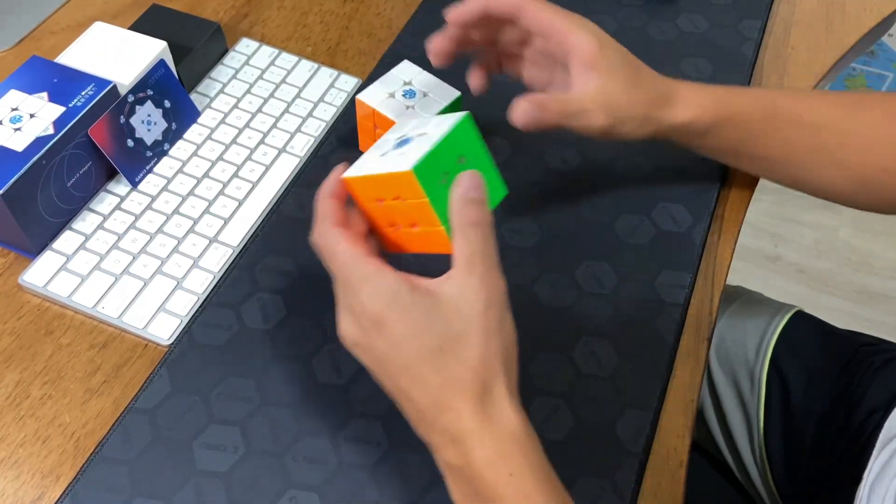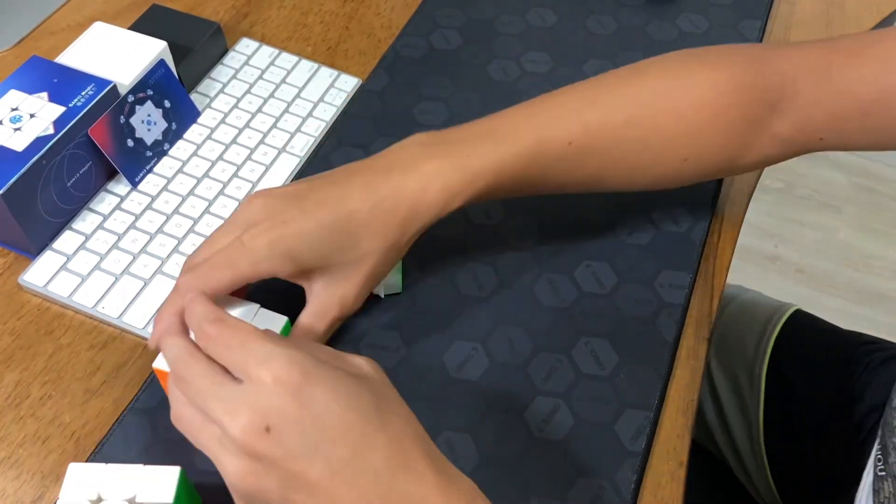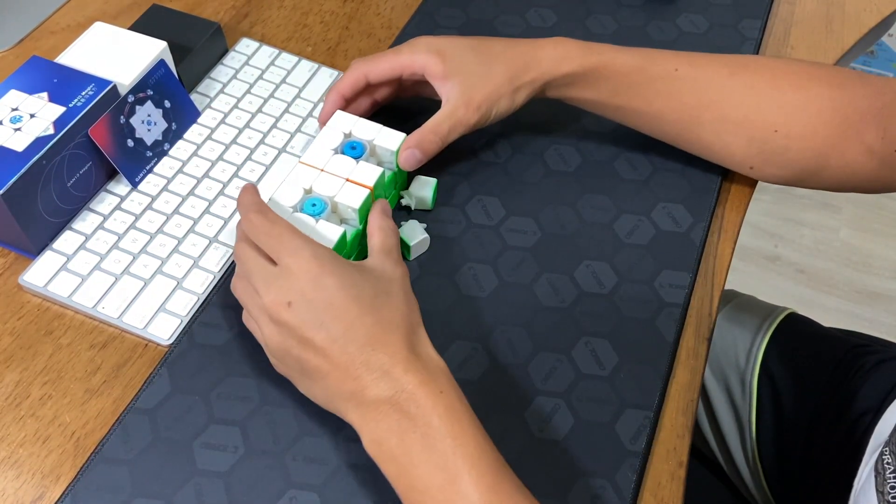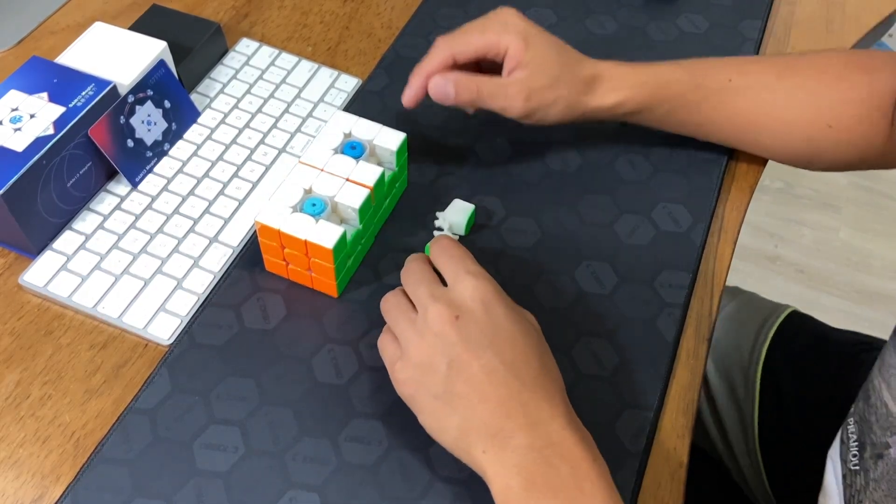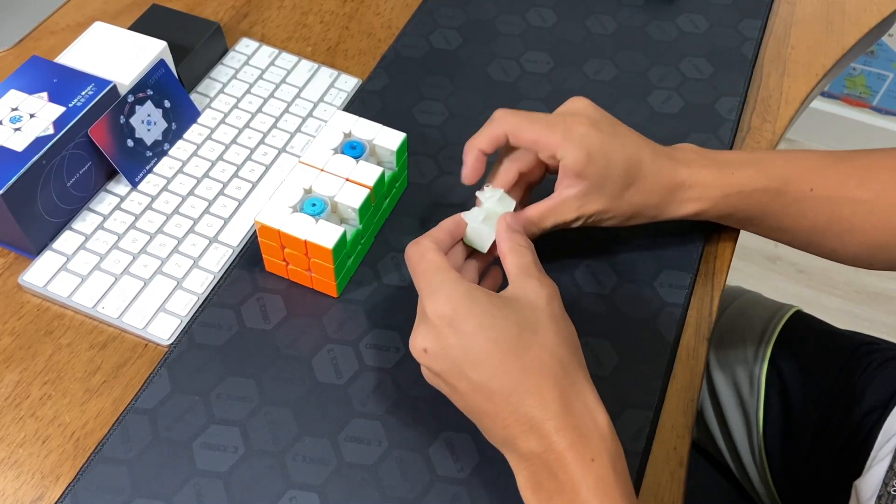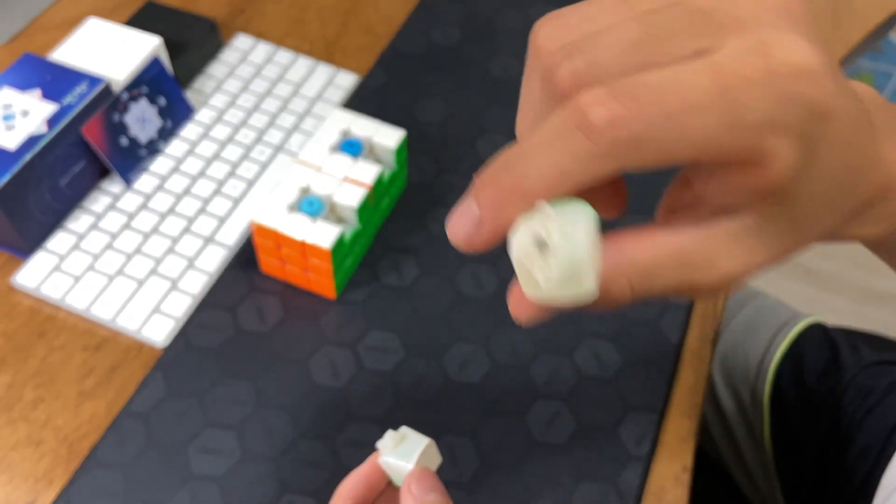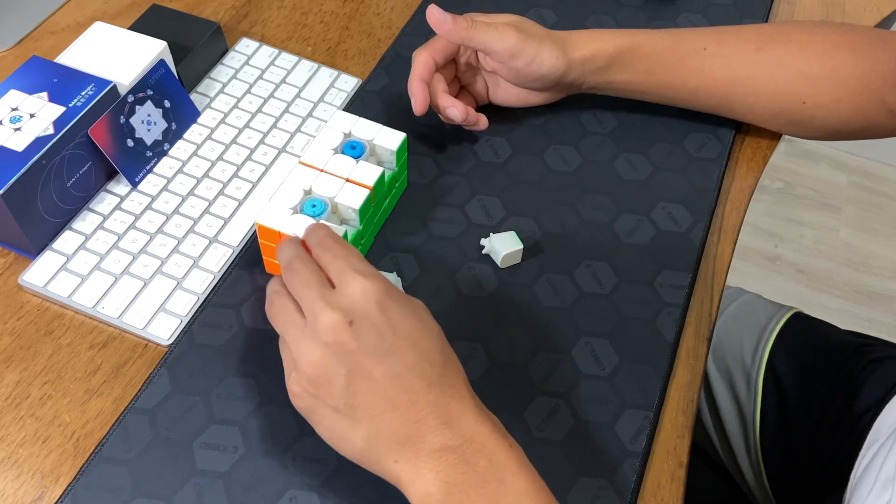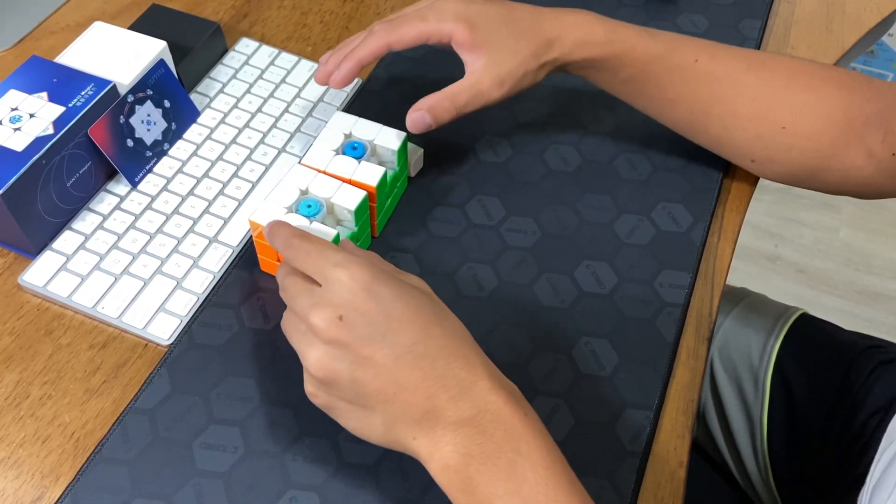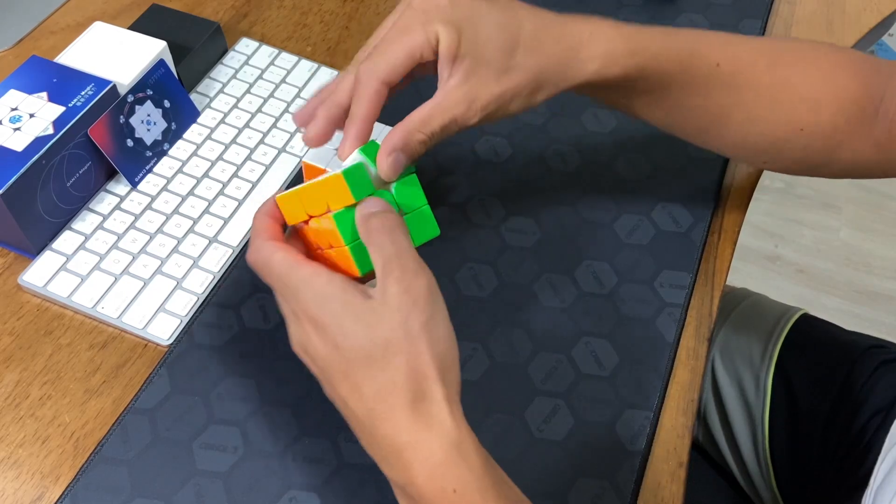So I have one of my GAN 12s here, so I'm just gonna compare the mechanism and the turning overall. If we take out the edges, this is where the main difference is. I'll just take off the caps, too. So if we look here, this is the 12, this is the 13. There's a pretty obvious difference, because there's no magnet in this edge, and there is in this one. This magnet in this new edge basically adds a whole new level of stability. It has the same realignment degrees, 30 degrees as the 12, but it feels a lot more snappy and controllable because of this added magnet.